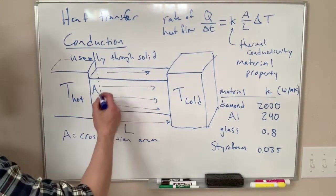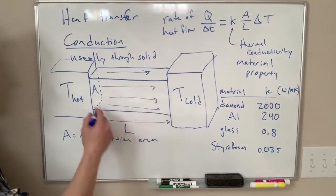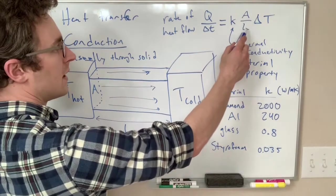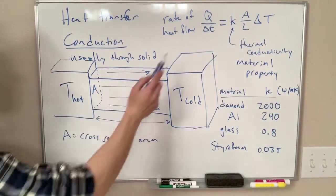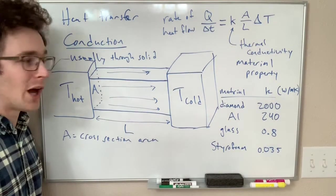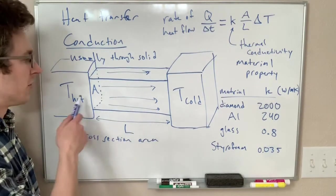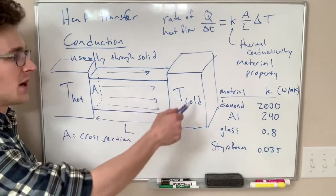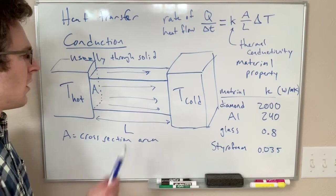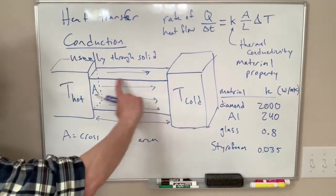So if we know the geometry of the thing doing the conducting, the A and L, we know the temperature difference and we know what the stuff is made of, we can figure out how many joules per second or how many watts of power are flowing—watts of power in the form of heat are flowing from this hot side to this cold side.